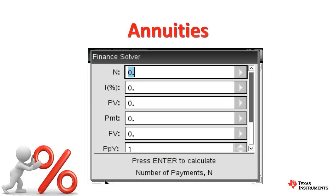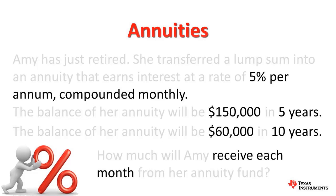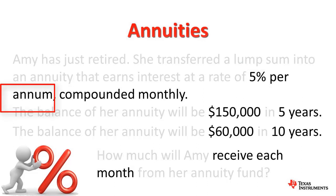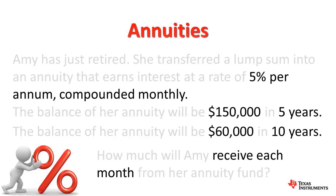The problem most students have answering these types of questions is extracting the information from the question, knowing how to enter it on the calculator, and determining which values are positive and which ones are negative. So let's start by extracting some of the information — write the amounts down on a piece of paper in point form. We see 5% is the interest rate, per annum means per year, compounded monthly — the TVM solver will take care of this. We just have to know where to enter the information.